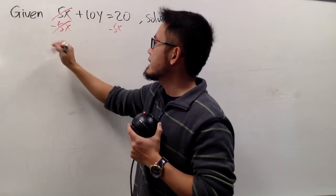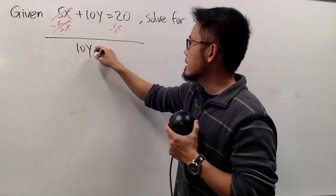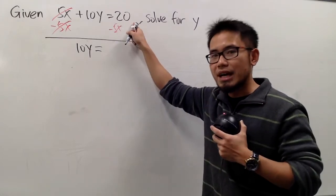So be sure you do that, and then we will have the 10y right here, and bring down the equal sign. This and that, we cannot combine terms, because this is just a 20, it doesn't have the x, right?